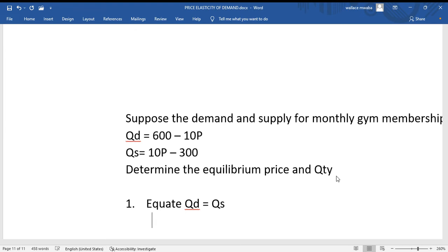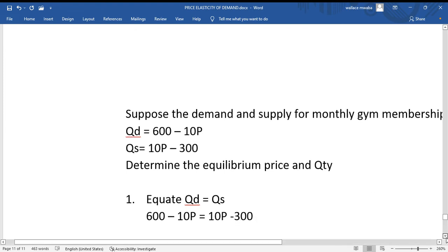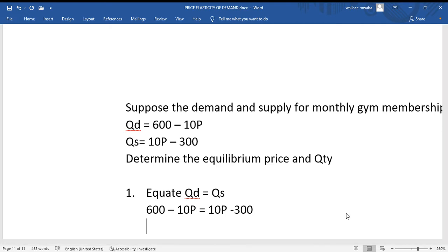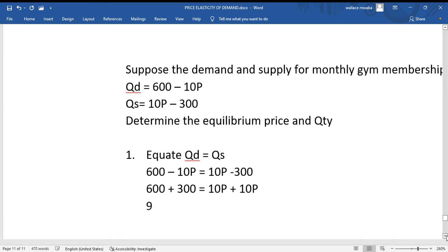So I'm going to say 600 minus 10P equals 10P minus 300. Basically we're trying to find the value of their market price which is P. So we're going to do algebra, grouping like terms together. So we say 600 plus 300 equals 10P plus 10P. 600 plus 300 that's 900 equals 10P plus 10P is 20P.